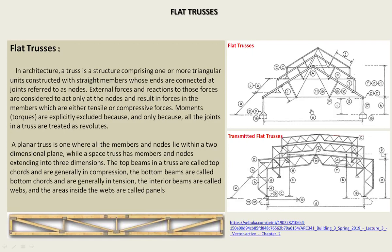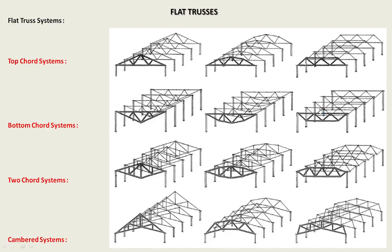The interior beams are called webs, and the areas inside the webs are called the panels. As you can see here, flat trusses and transmitted flat trusses. For the flat truss systems, we can divide them into four parts: top chord systems, bottom chord systems, two-chord systems, and camber systems.